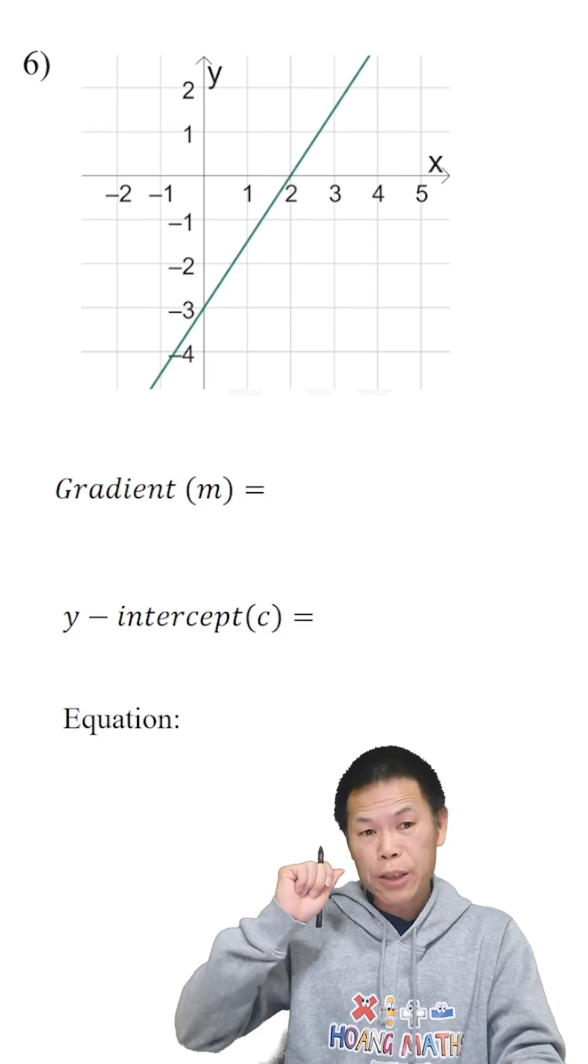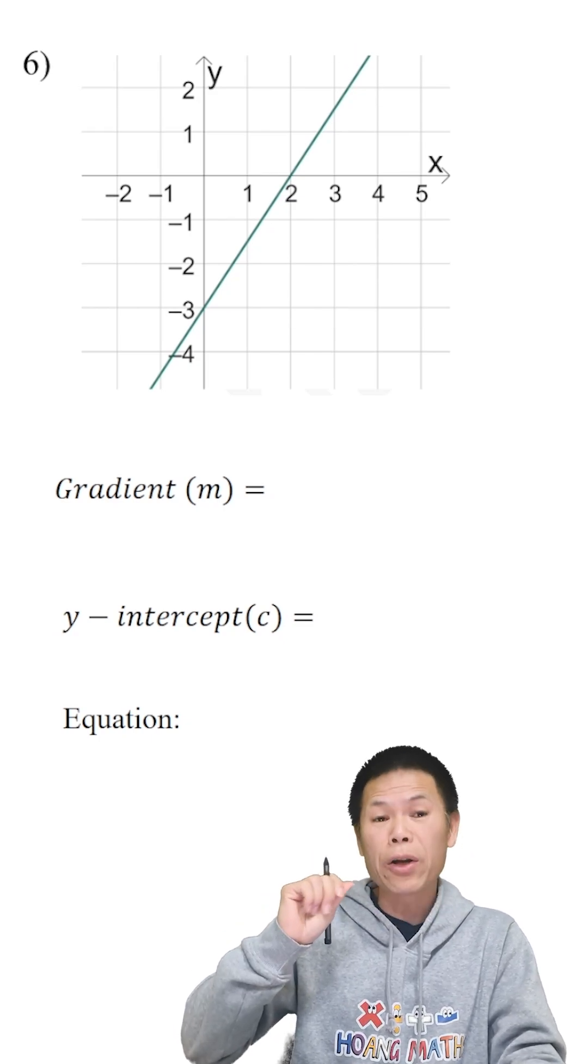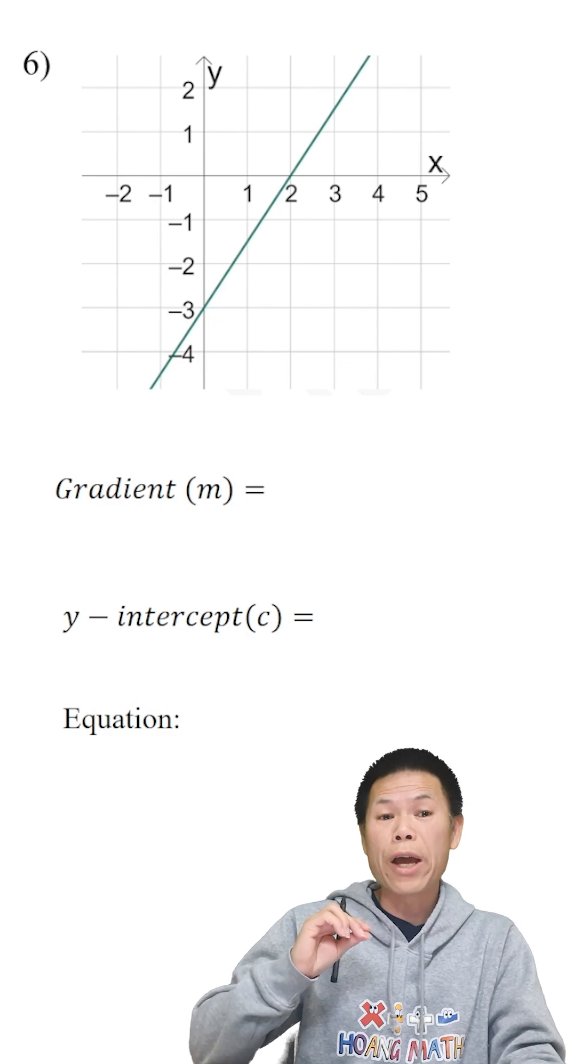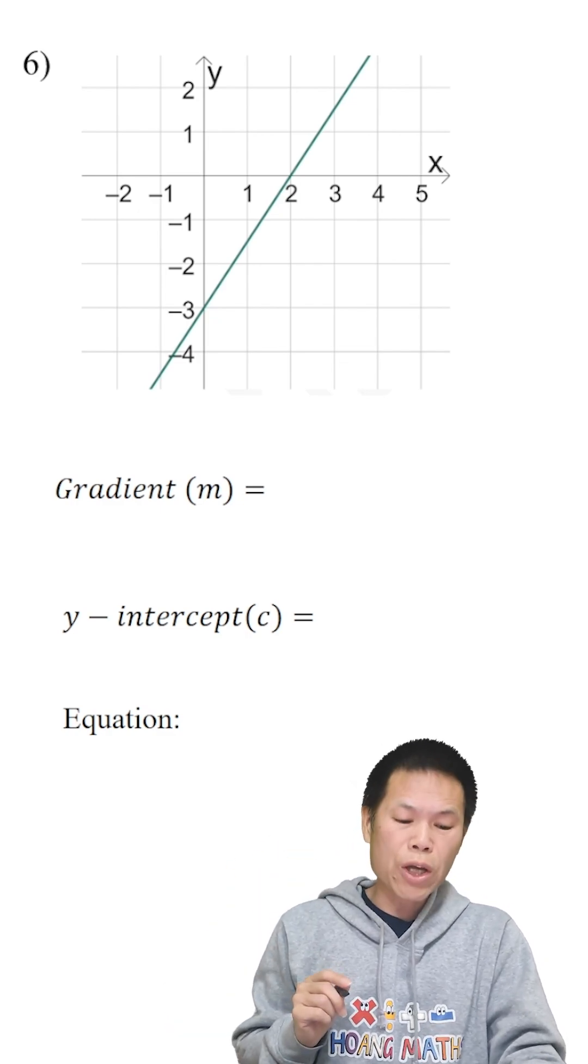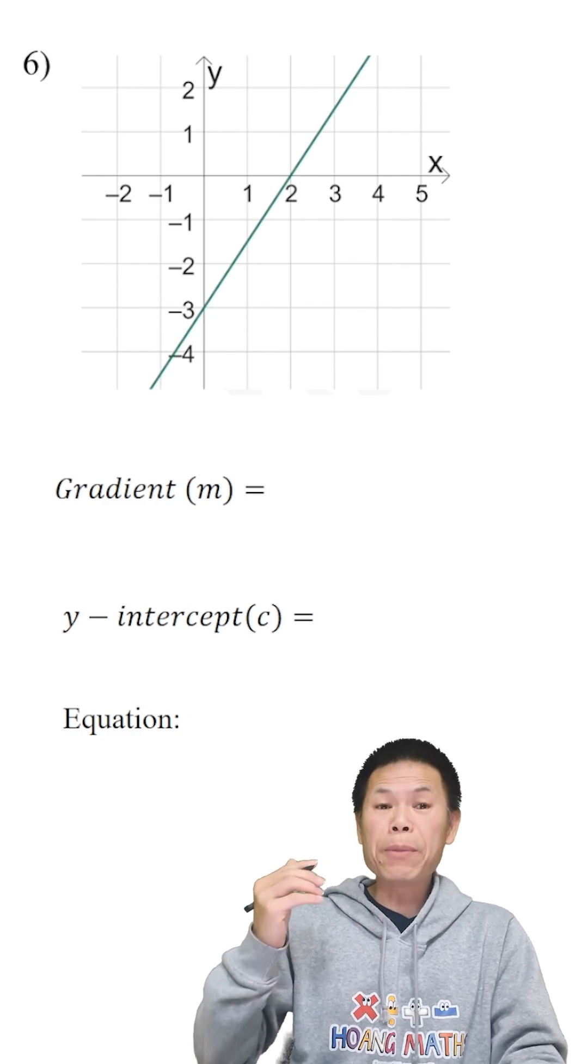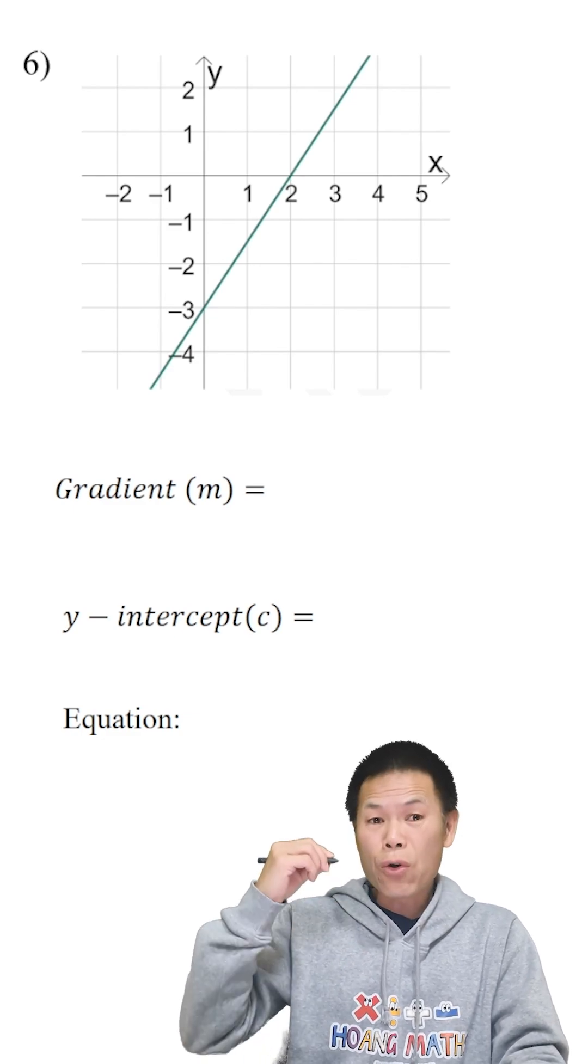So we know that the gradient is positive. If you think about it, when x gets larger, y is also getting larger as well, so going in the same directions if you wish. So therefore m is positive. So therefore the rise...